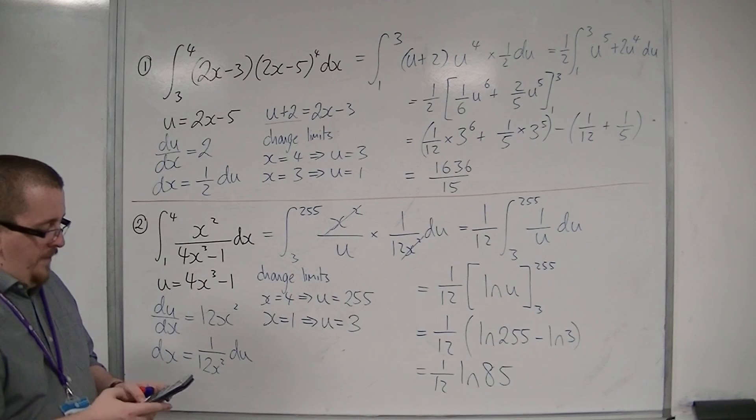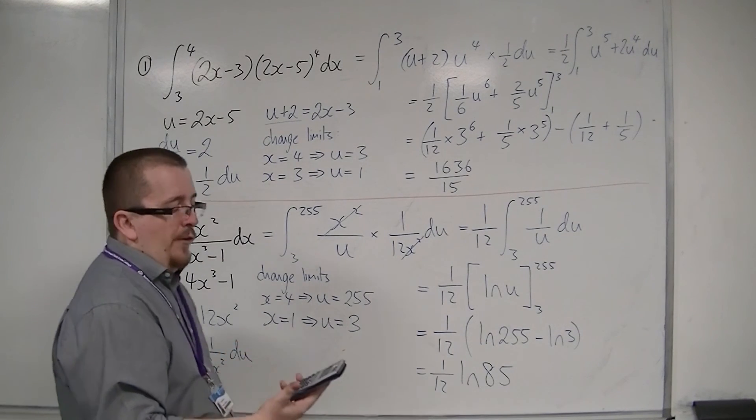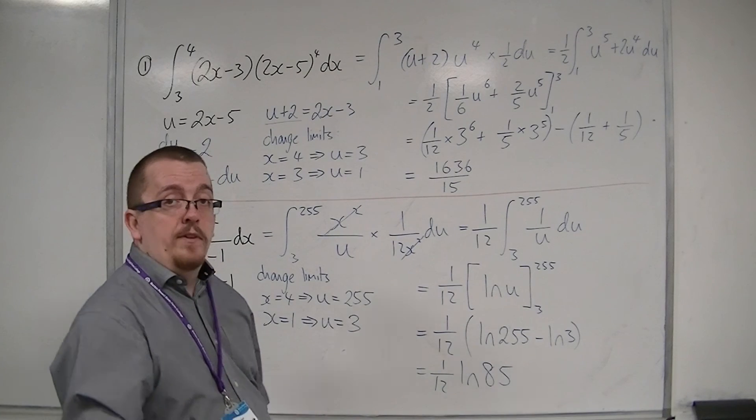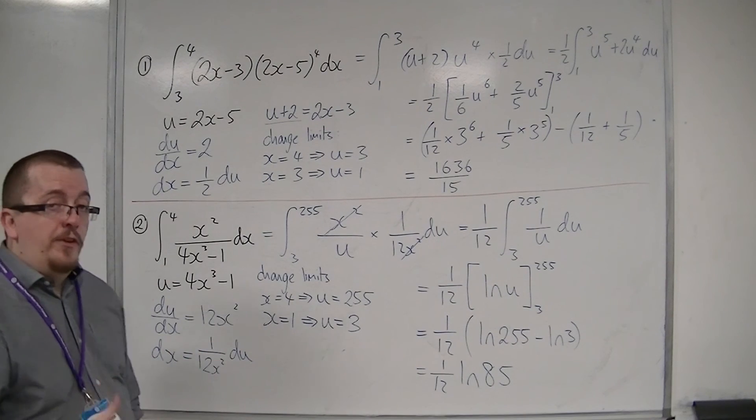So log 85 divided by 12, if you wanted a decimal approximation, is 0.37 to 2 decimal places. So that is how we do number 2.